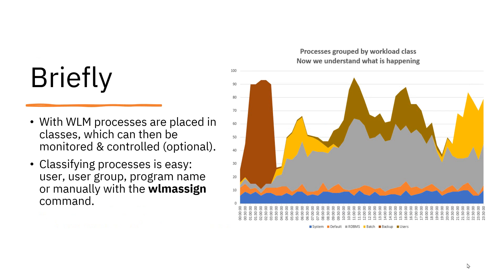What WLM is going to do is put the processes into classes, and then we can monitor and control those classes. The control is optional — you don't have to do that. But you can now see what these workloads are doing because you've only got a handful of workloads, and you can see which are taking up the bulk of the resources: CPU, memory, and block I/O, and if they're going wrong or behaving unusually. We can also classify processes manually with the 'wlm assign' command, which helps with tricky combinations where commands may have the same name but are attached to a different database.